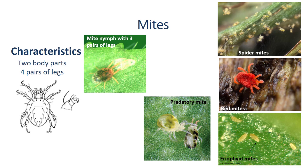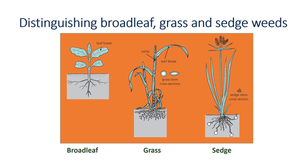Weeds are unwanted plants in the landscape. There are many weed species, but they can all be classified into one of three major groups. Broadleaves have wide to narrow leaves with net-like veins. Grasses have narrow leaves arranged in sets of two, and stems are rounded or flattened. Sedges look like grasses; however, their leaves and flowers are arranged in sets of three and their stems are triangular in cross-section. The saying is that sedges have edges, which refers to the triangular stems.